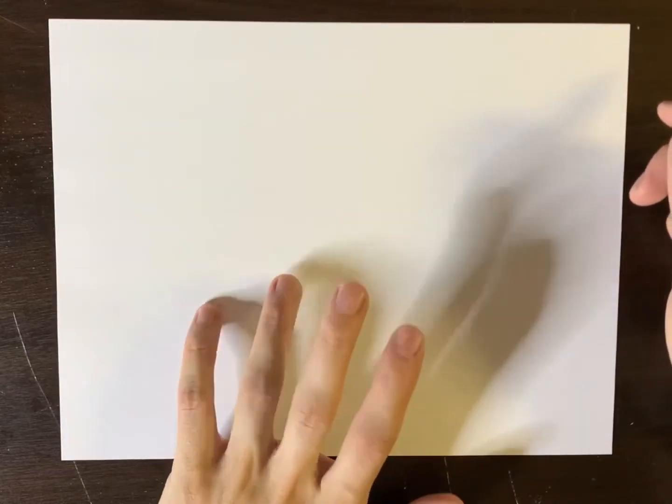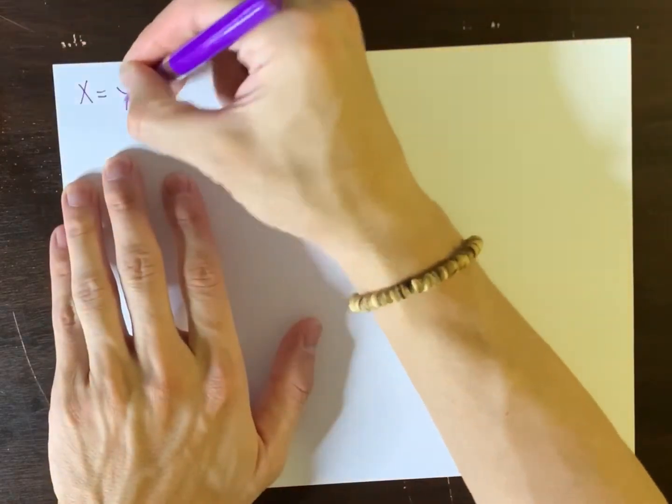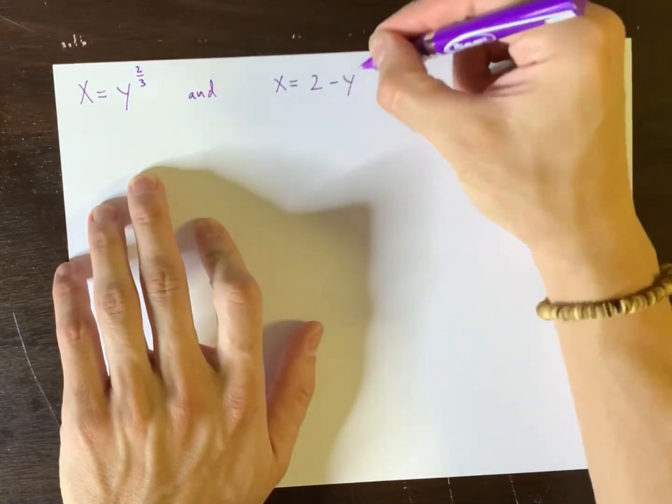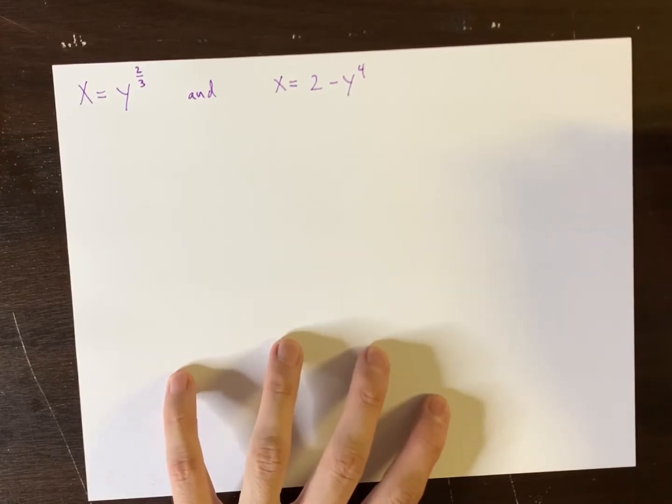So we want to find the area that is bounded by the following two curves. Now, I think the hardest part here, or one of the harder parts, is to come up with a figure.